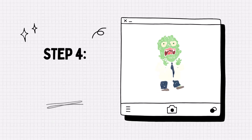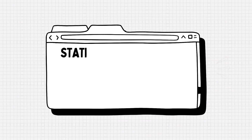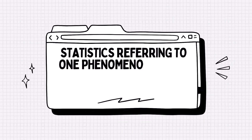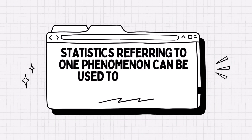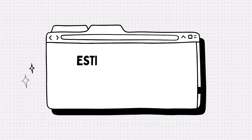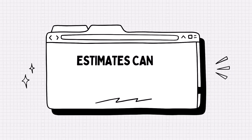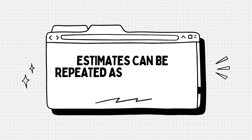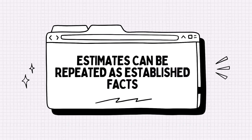Step 4: Transform. A statistic describing something specific can be transformed to refer to something else. This happened in our anorexia example, where the number of people affected became the number of people who died. Something that begins as an estimate can be misunderstood and repeated as though it was an established fact, presumably based on good evidence.